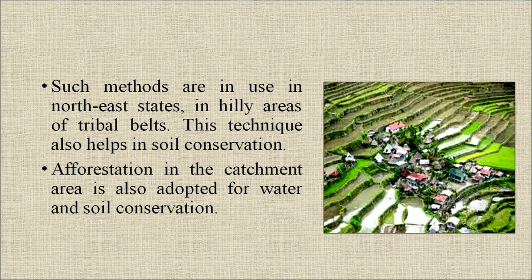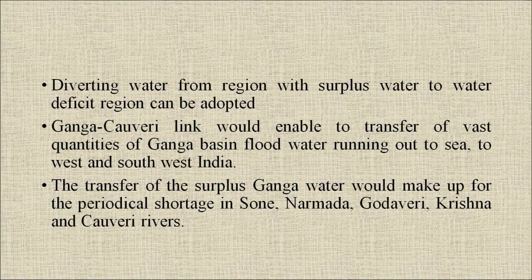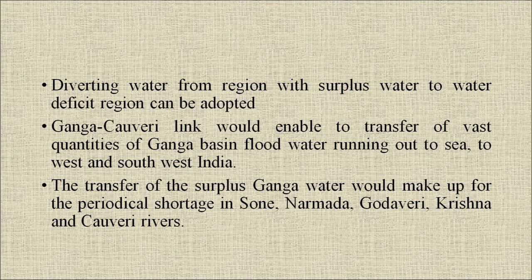Afforestation in the catchment area is also adapted for water and soil conservation. The next is interbasin transfer of water: areas in the western and peninsular region have comparatively low water resources, while northern and eastern regions drained by the Ganga and Brahmaputra have substantial water resources. Diverting water from regions with surplus to water-deficient regions can be adopted. The Ganga-Cauvery link would enable transfer of vast quantities of Ganga basin flood water to west and southwest India, making up for periodical shortages in the Sone, Narmada, Godavari, Krishna and Cauvery rivers.